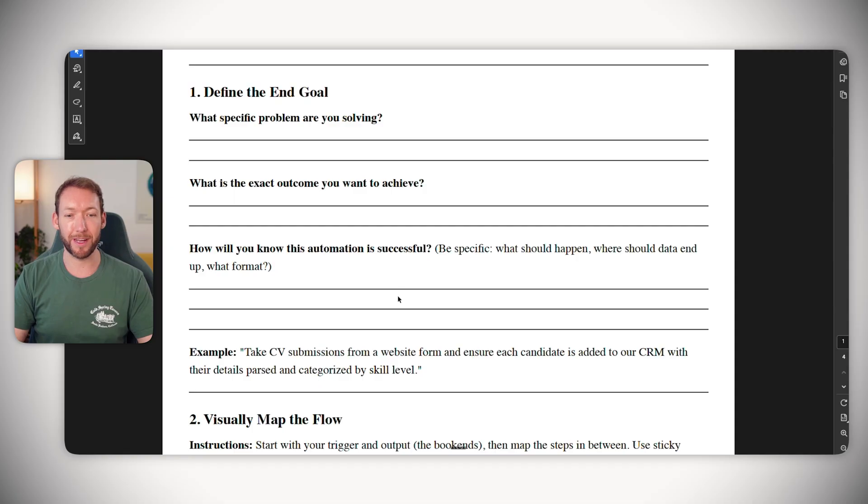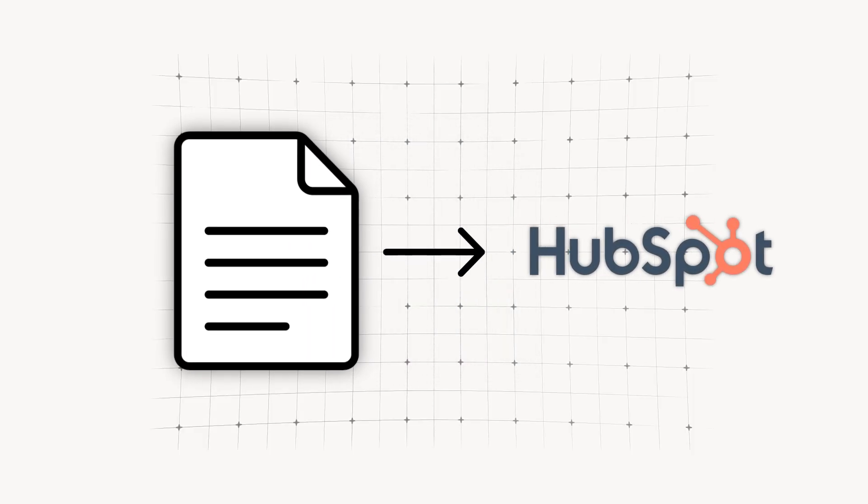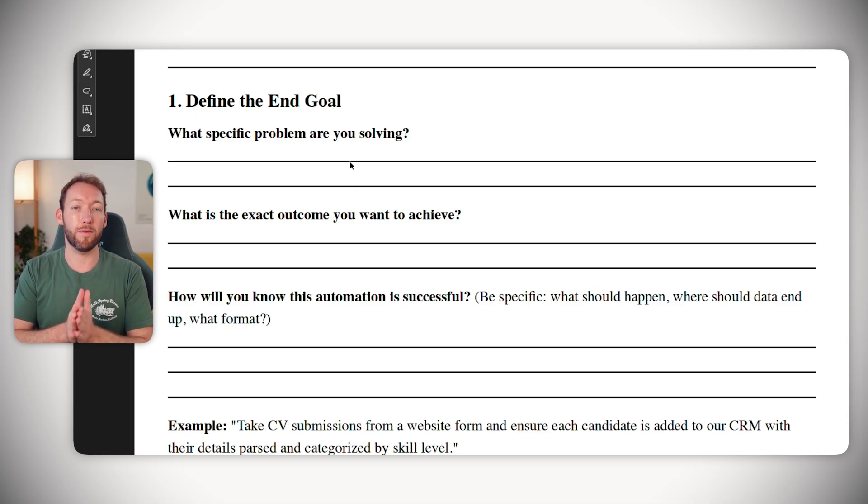We're going to use the example from down here: Take CV submissions from a website form and ensure each candidate is added to our CRM with their details parsed and categorized by skill level. So basically, we have an open job and we're taking the submitted CVs, scanning the information and uploading those summaries to our CRM, which we can pretend in this case is HubSpot. So we know exactly what specific problem we're solving here.